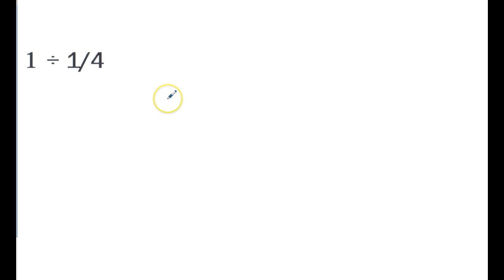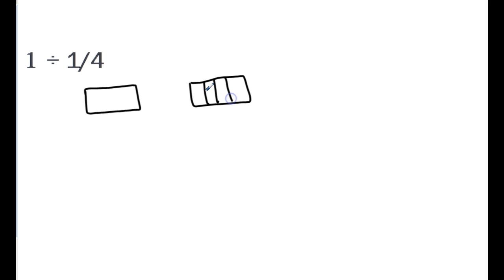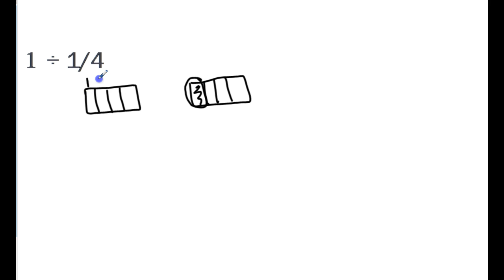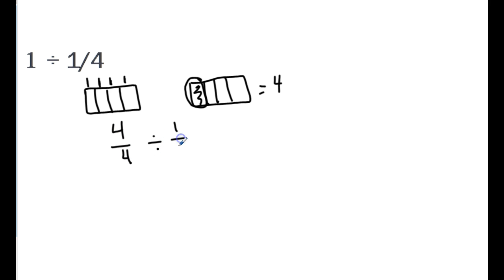In this problem we have one whole divided by one-fourth. Visually, one whole looks like this, and one-fourth looks like this. The problem asks how many one-fourths fit into one whole. I need common denominators, so I'll separate the whole into fourths. I see one can fit here, another here, another here, and another here — so my answer is four. Rewriting with common denominators, this becomes four-fourths divided by one-fourth. The common units drop away, and four divided by one equals four.